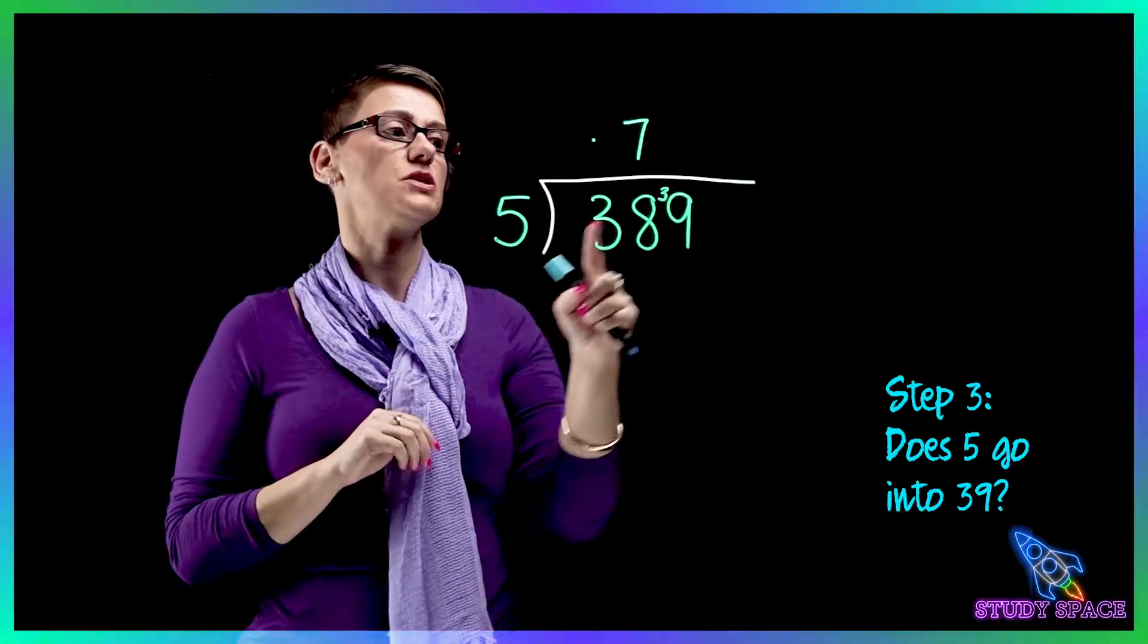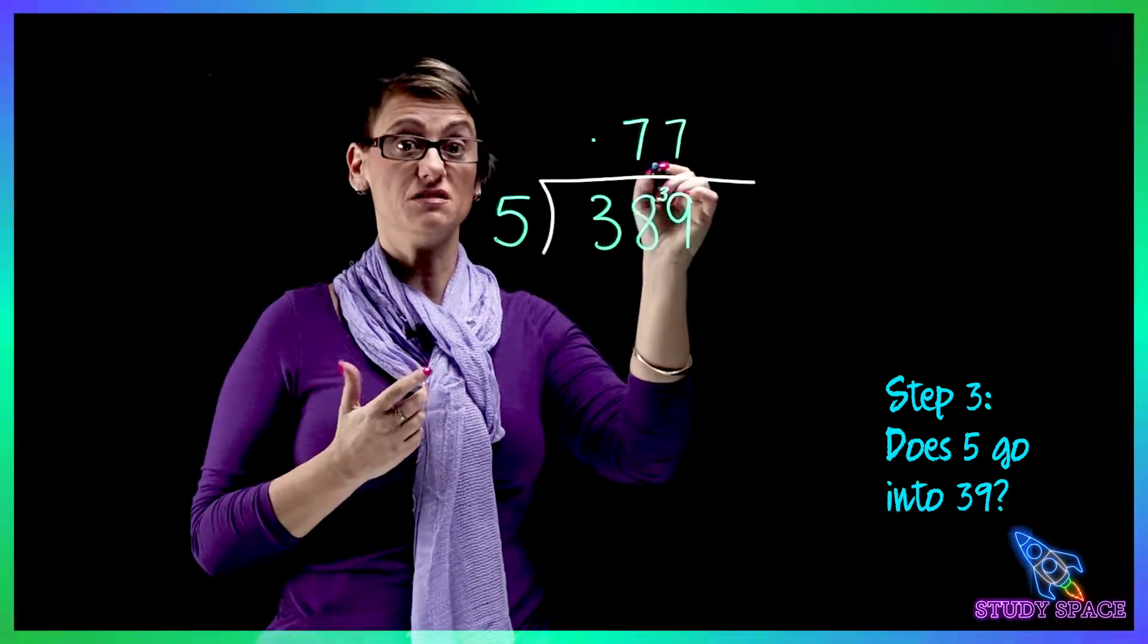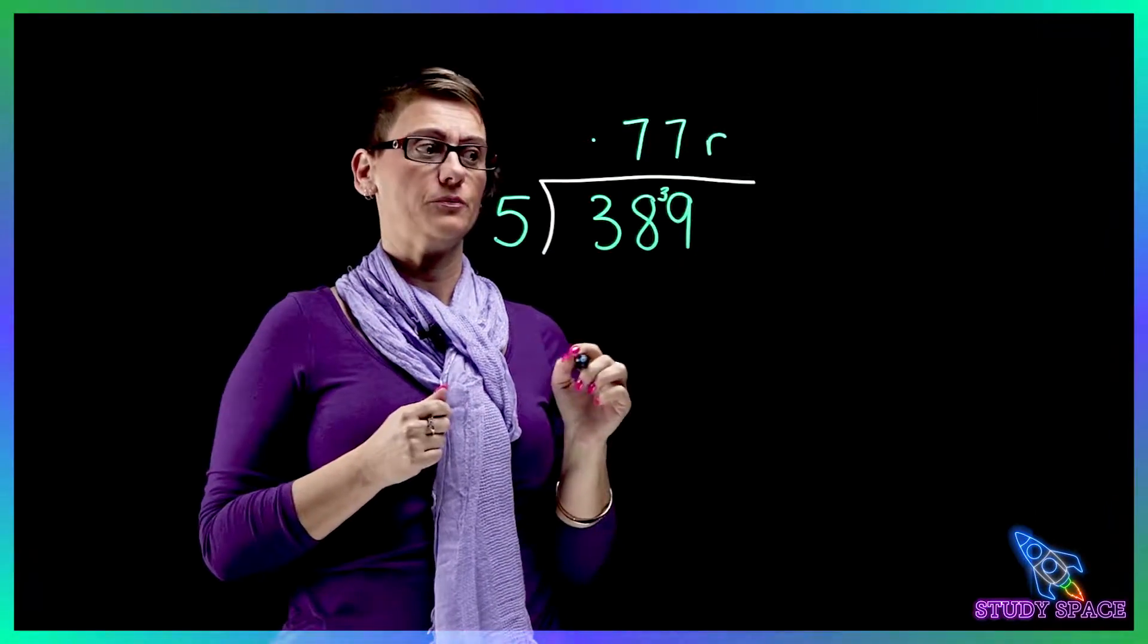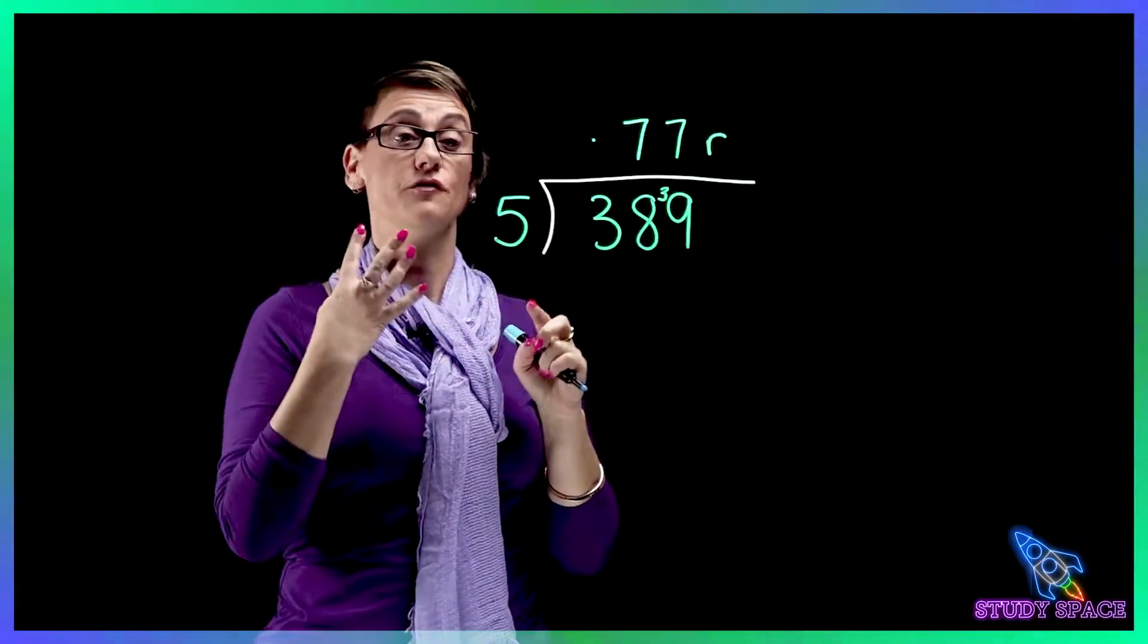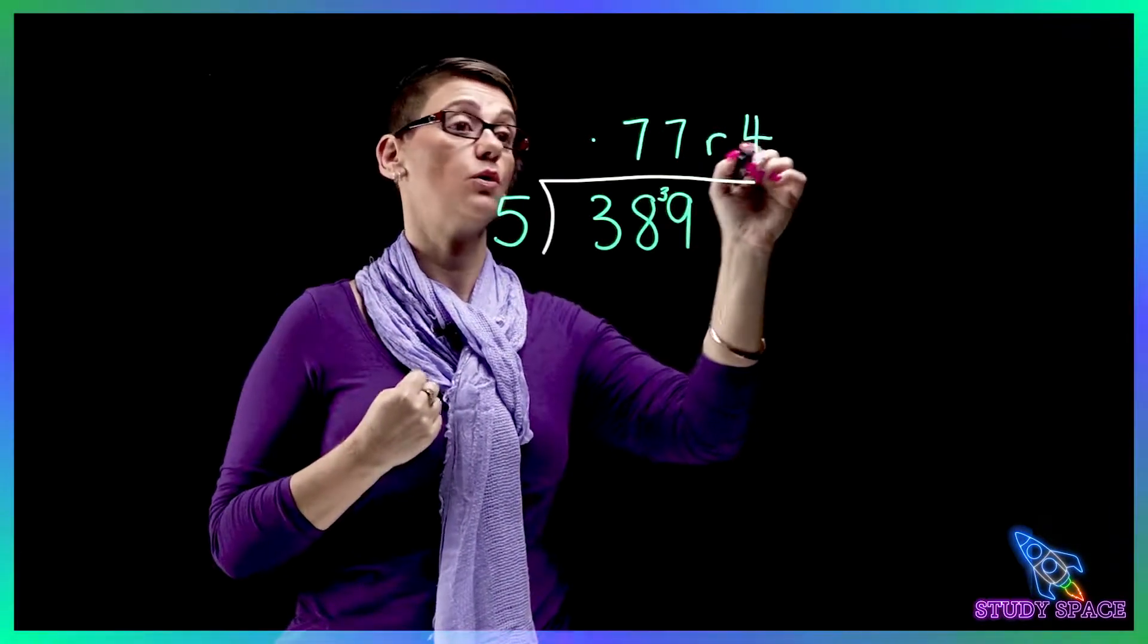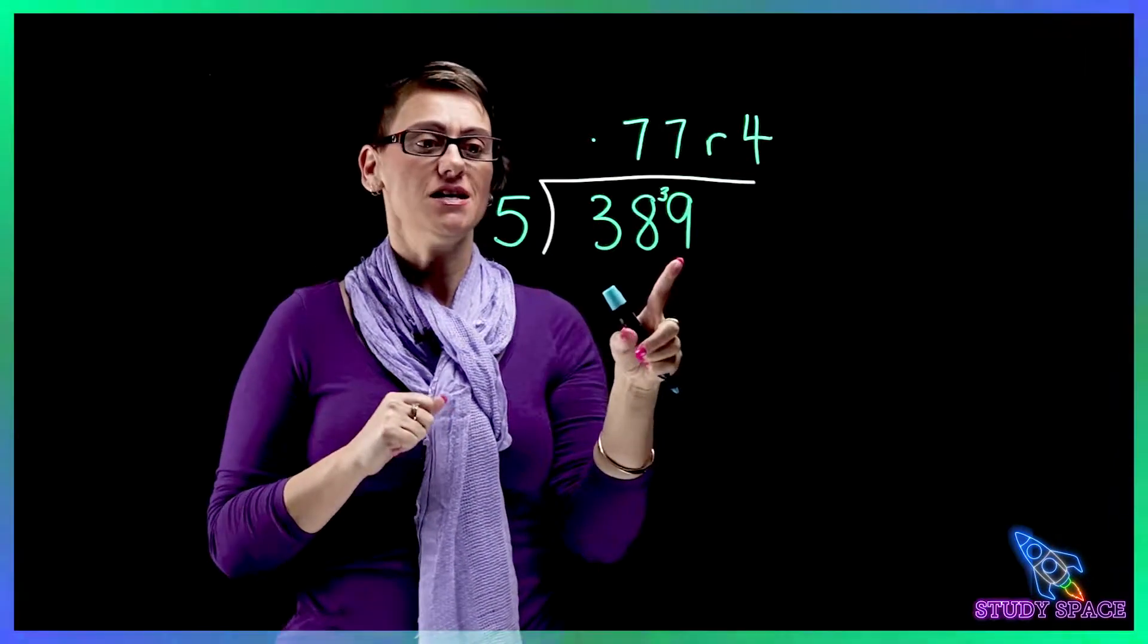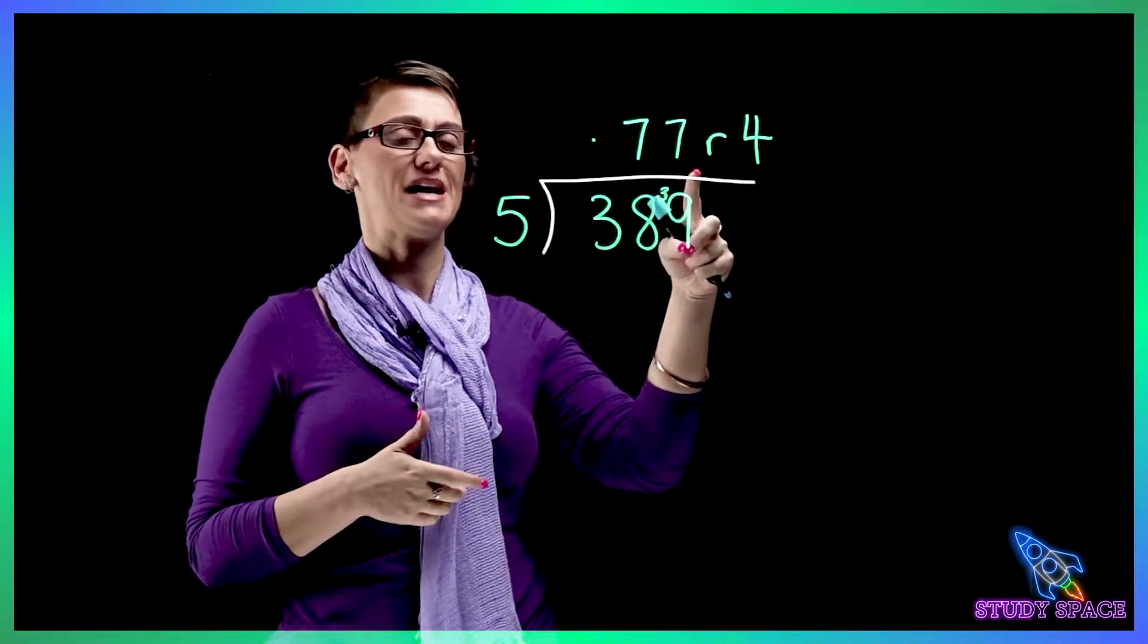Okay, 5 into 39. Again will be 7, but will I have leftovers? I will definitely have leftovers. So how many will I have? 35, 36, 37, 38, 39. So 4 leftovers or remainders. So 389 divided by 5 equals 77 remainder 4.